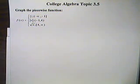College Algebra, Topic 3.5, graphing the piecewise function f equals 1 over x, the absolute value of x, and the square root of x.